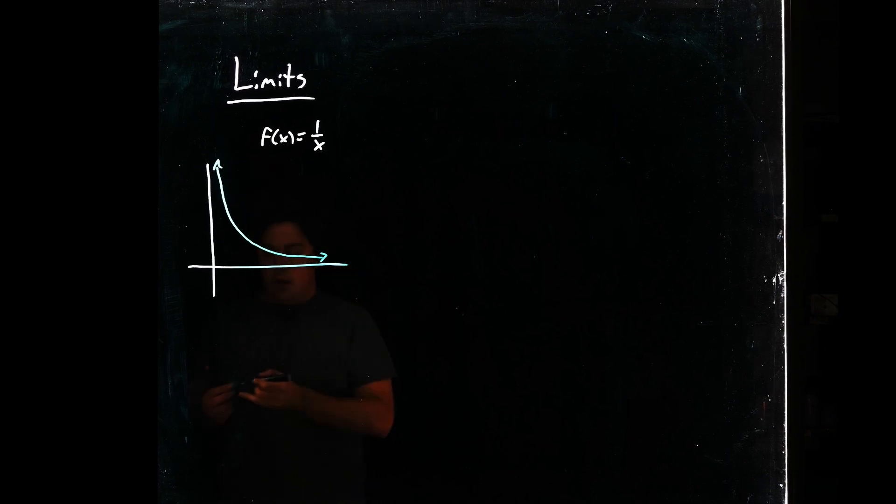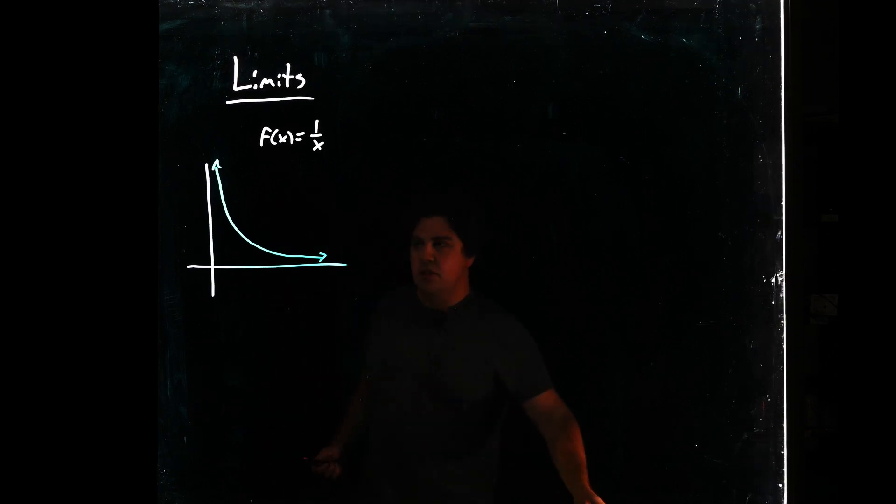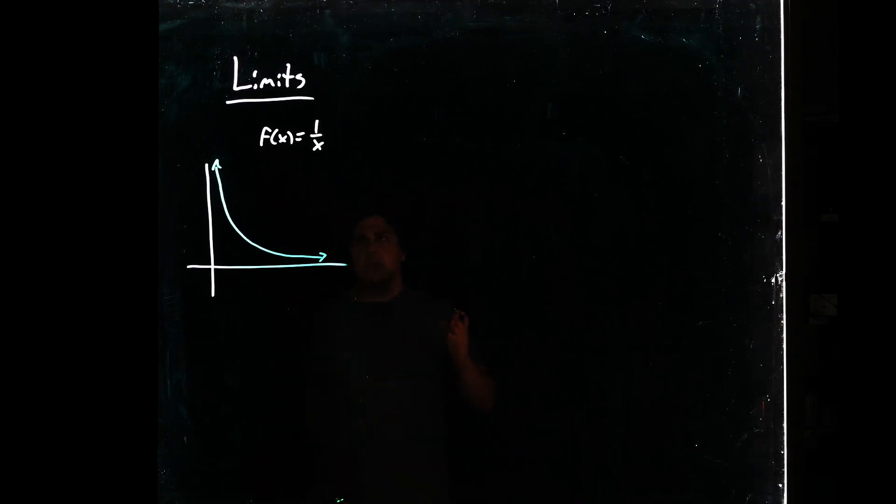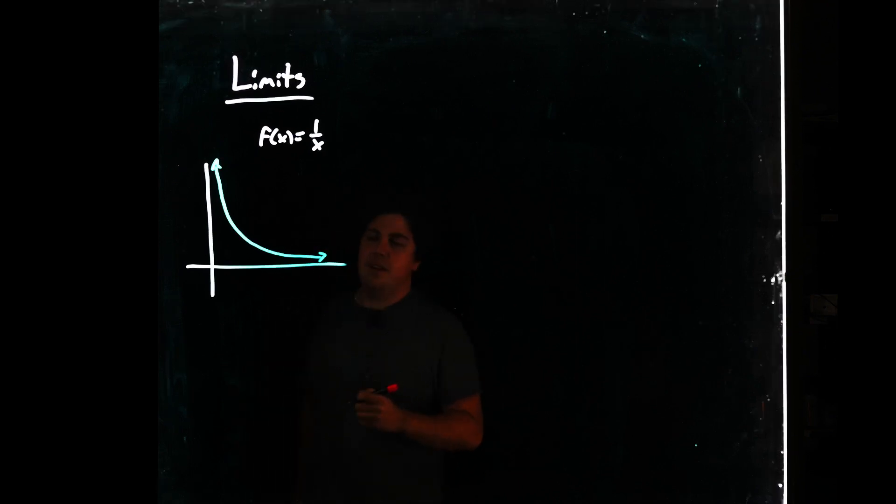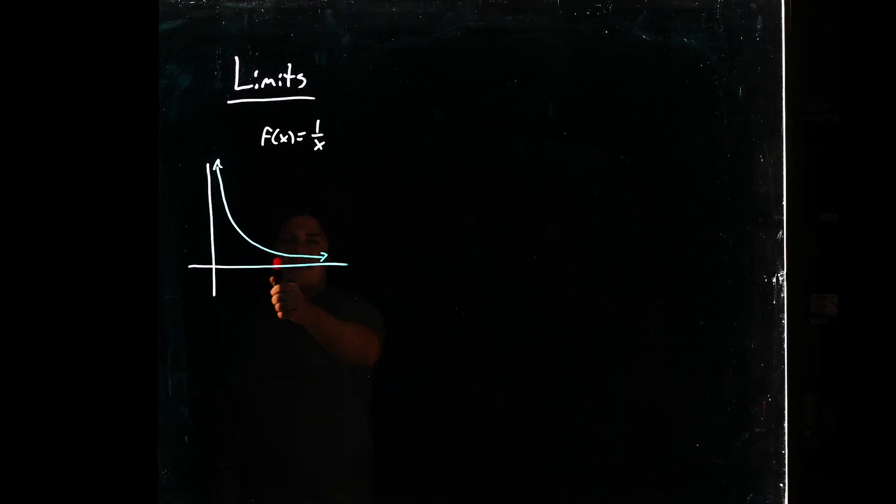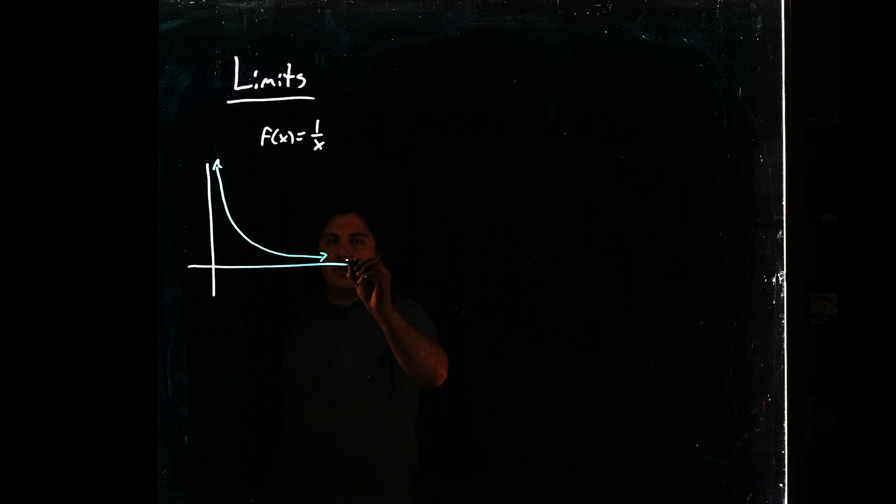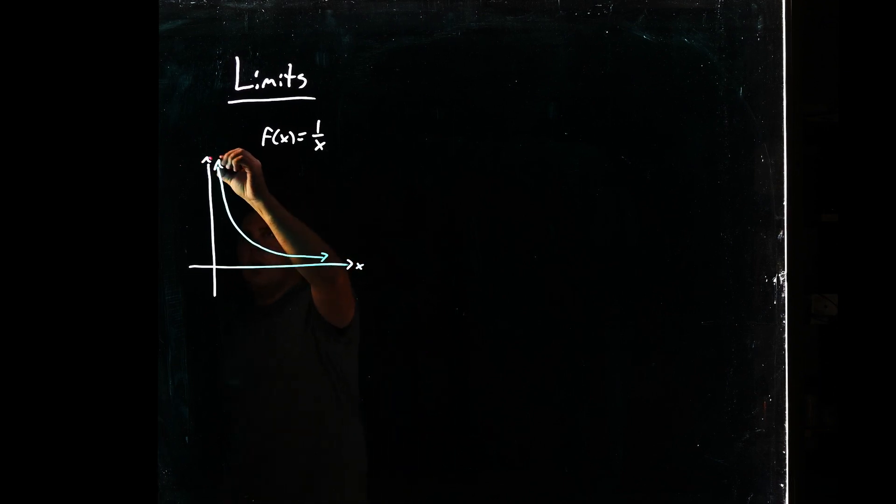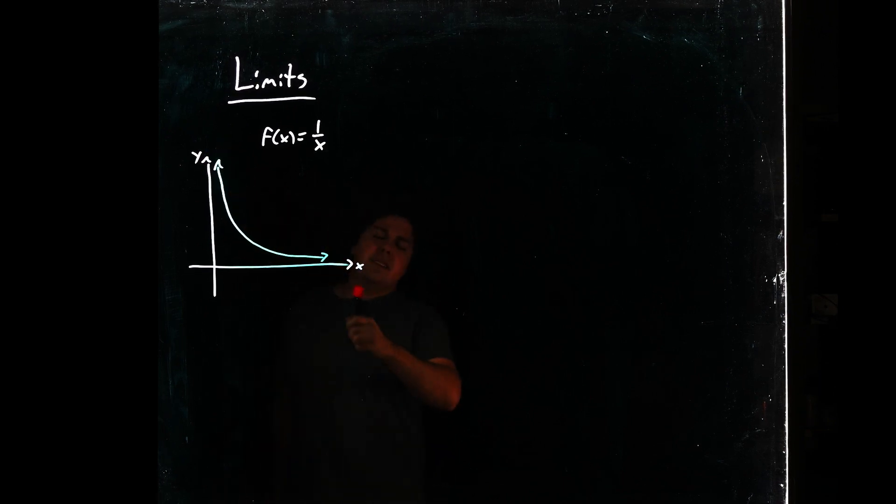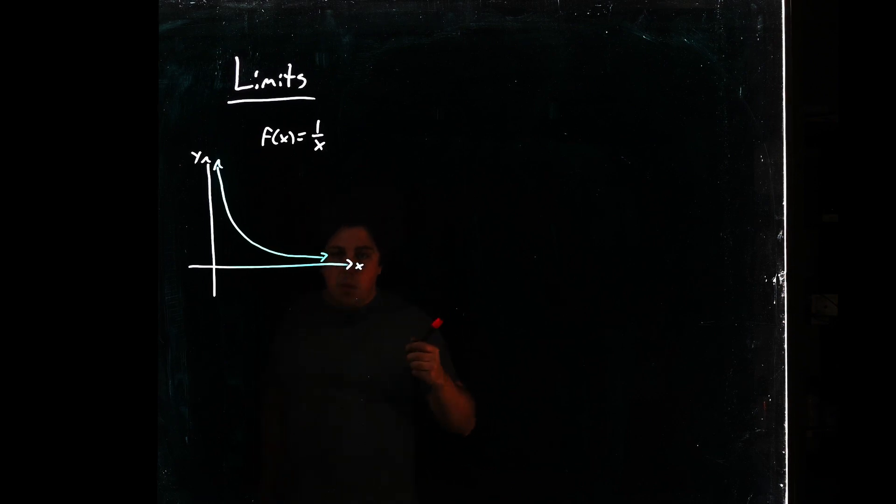We can see, and you can plug in some numbers yourself with your own numerical investigations, that as x becomes very large—let's just add this is our x and this is our y, as usual—as x becomes very large, 1 over x becomes very small.